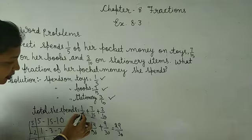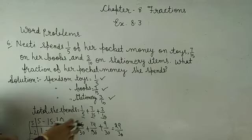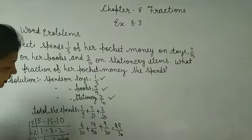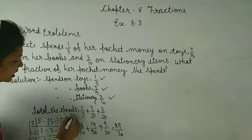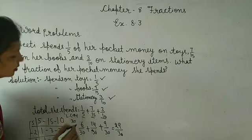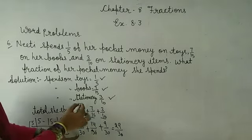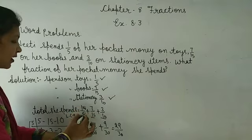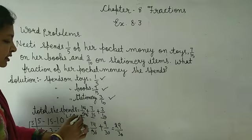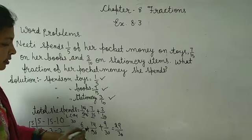To make 5 into 30, multiply by 6. So multiply both numerator and denominator by 6: 1 times 6 is 6, 5 times 6 is 30. We get 6 upon 30.